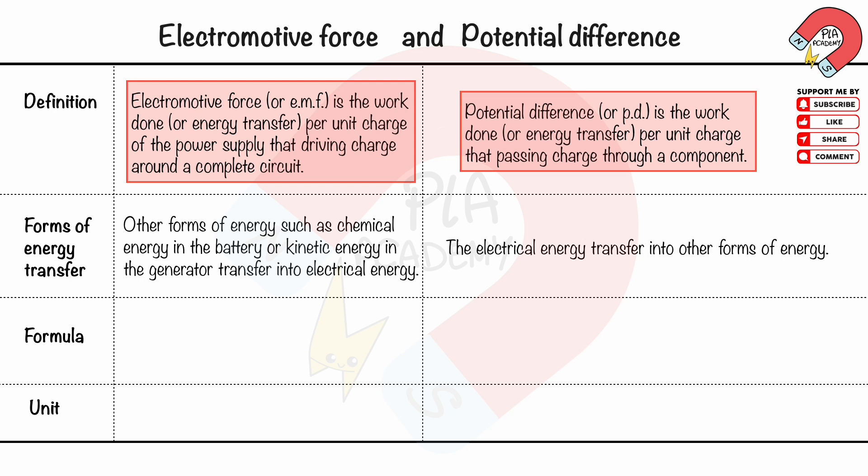The formula for the electromotive force can be written as E equals W divided by Q, where E is EMF in volts, W is the work done or energy transferred in joules, and Q is the charge in coulombs.